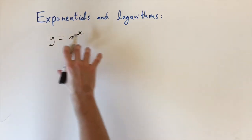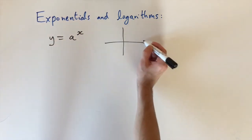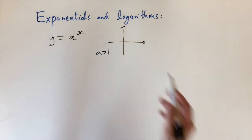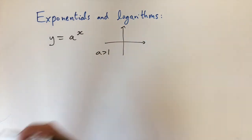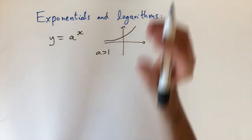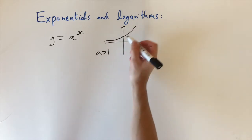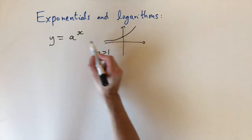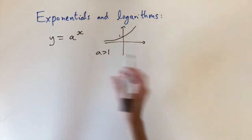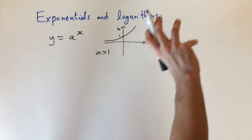We can look to see what the graph is like by plotting it — there are two different cases. If a is greater than 1, this is a function that's going to grow very quickly, increasing exponentially. The y-intercept, where x equals 0, is always 1 because anything raised to the power of 0 is just 1.